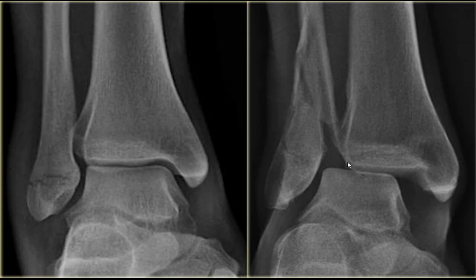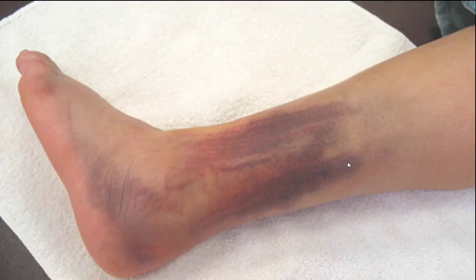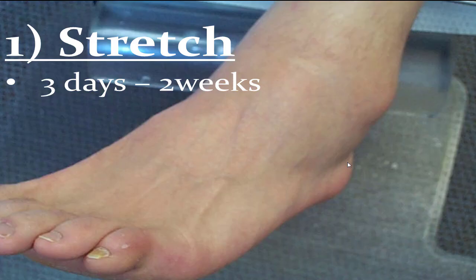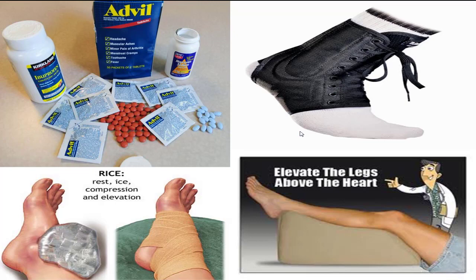If you have a high ankle sprain, what you do depends on how bad it is — it could be stretched, partially torn, or completely ruptured. If you have a stretch, you probably won't have instability, just a little bit of pain up there. If you can still put weight on it, you'll be out three days to two weeks. What you want to do here is rest, ice, and compression. Ice is essential — get it on there for 15 to 20 minutes a day. This will prevent inflammatory cells from getting in there; it's not just to control pain, it's to speed up healing rates.